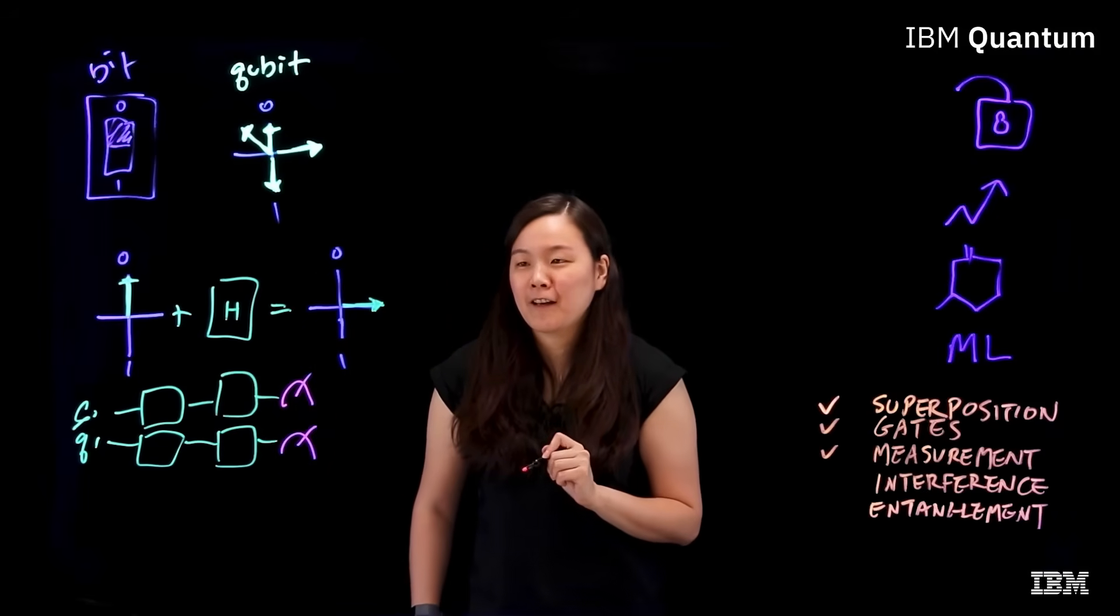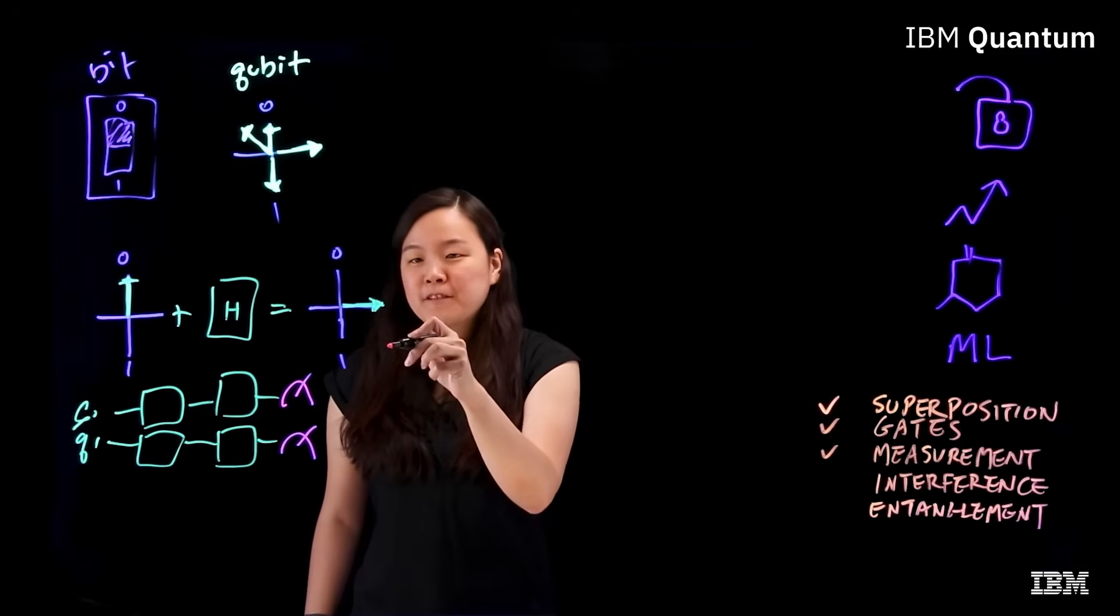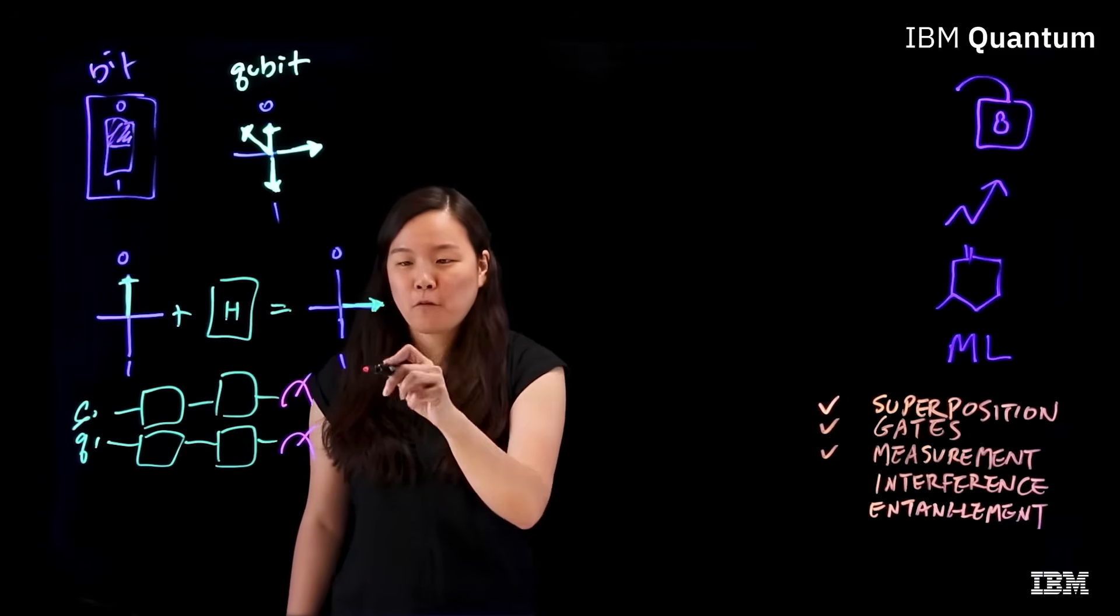When a qubit is measured, it loses its superposition and collapses into just a simple zero or one.